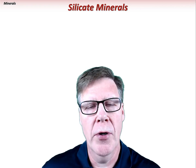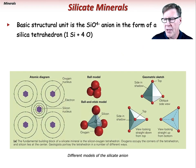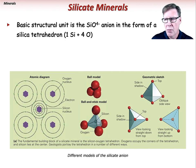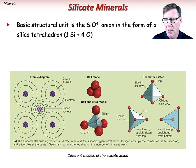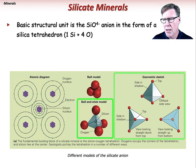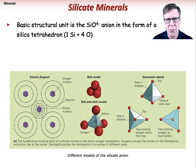Silicate minerals make up a very important group of rock-forming minerals. The basic structural unit is the SiO4 anion — one silicon atom and four oxygens with a valence of negative four. This anion forms a silica tetrahedron, with the silicon atom in the center covalently bonded to four oxygen atoms around it. There are various ways this can be portrayed: a map view, atomic diagram, ball model, ball-and-stick model, or geometric sketch.